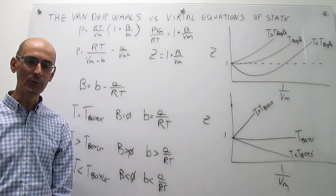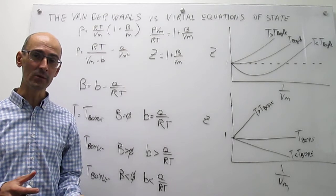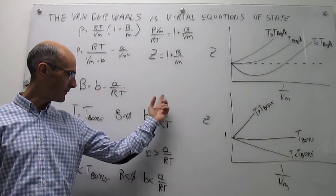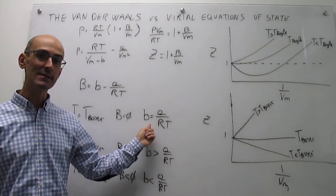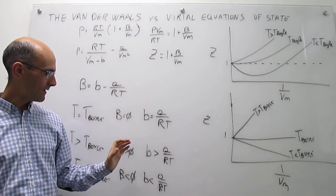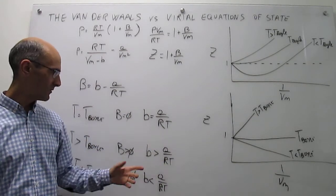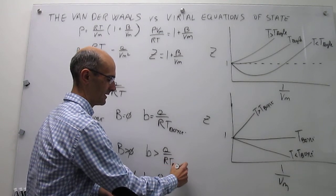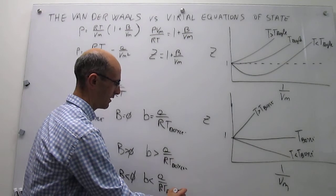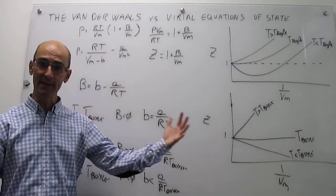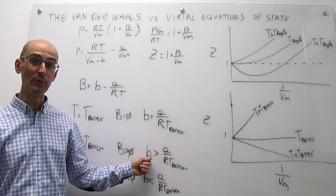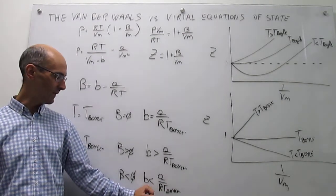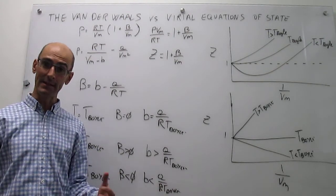In this video, we learned that the a and b parameters of the van der Waals Equation of State are related to the Boyle temperature in a straightforward manner. When b equals a over RT boil, you have ideal behavior. When b is greater than a over RT, repulsions are dominating. And when the second Virial coefficient B is negative — meaning b is less than a over RT — attractions are dominating.